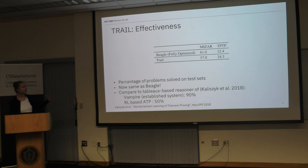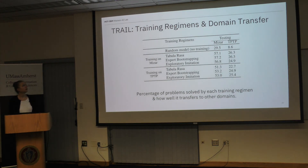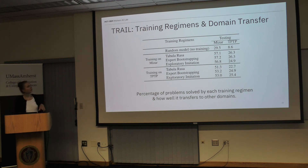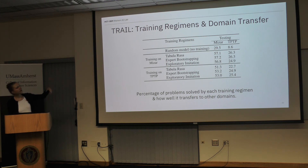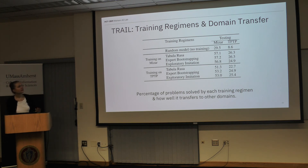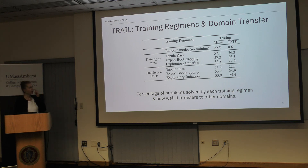We also focused on domain transfer — training on one dataset and testing on a different one. Training on TPTP and testing on MIZAR gives slightly lower performance than training on MIZAR itself. But training on MIZAR and testing on TPTP actually gives even higher performance. The percentages are still relatively low overall, so there is room for improvement, but domain transfer is an important direction. We also compared the different training regimens but couldn't find a significant difference between them.